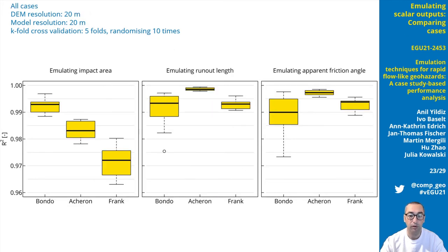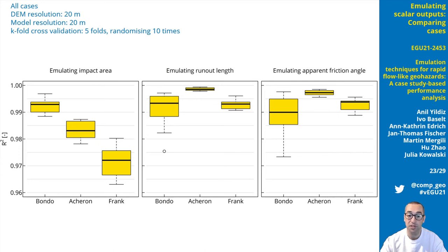Here we can see the comparison of emulation performance for scalar outputs across cases. DEM and model resolutions were capped at 20 meters. The cross-validation was performed again with k-fold technique. Even though the release volumes, flow mixtures, and topographies are different, R-square values higher than 0.96 were obtained for all cases. This means we can use emulation techniques with confidence to estimate scalar outputs of runout simulations, meaning one model run produces one numeric output such as impact area or runout length.